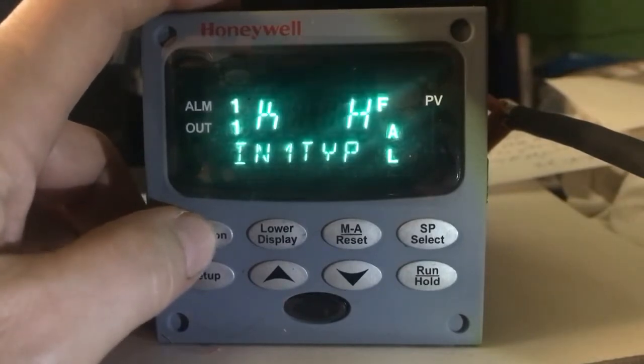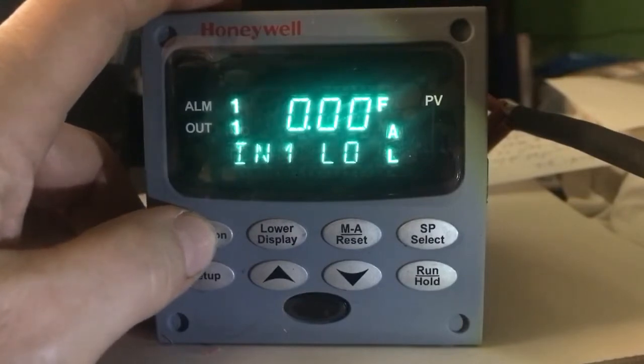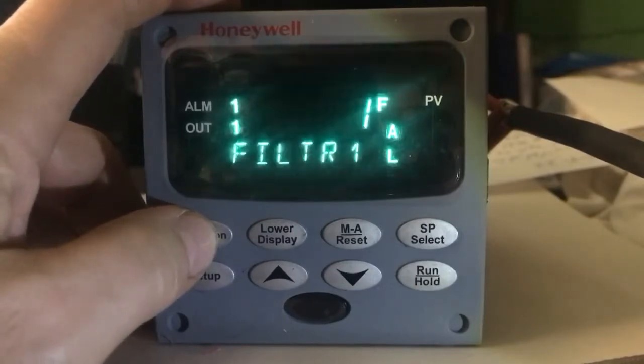This is set up with a type K thermocouple. The type K thermocouple has its own parameters that the UDC 2500 automatically programs in there. Type K high temperature thermocouple has a maximum temperature of 2400 degrees, a minimum temperature of zero degrees, and then there's other parameters going through here on the inputs.